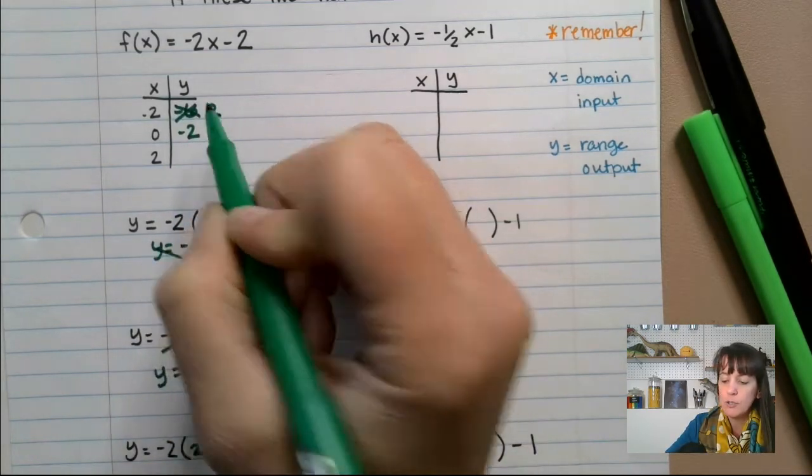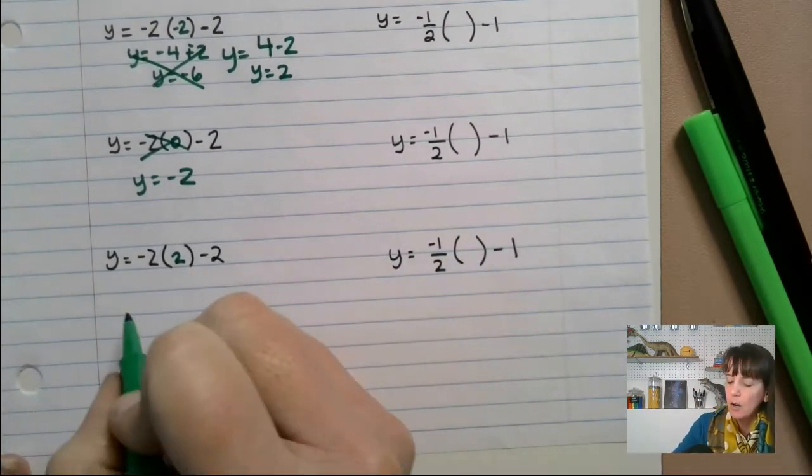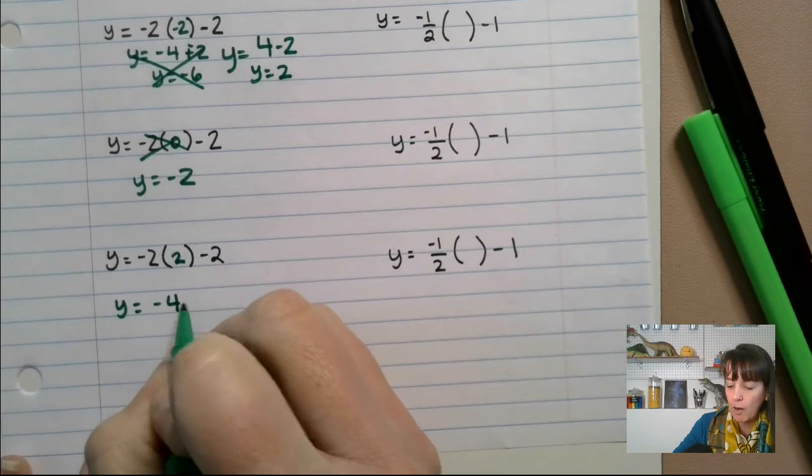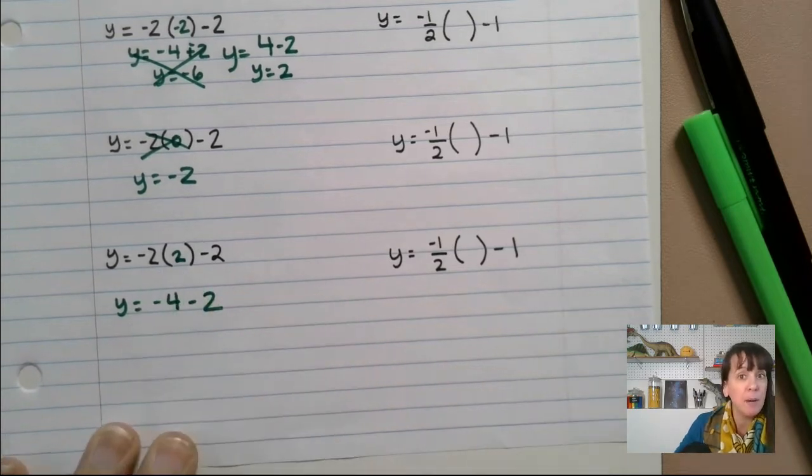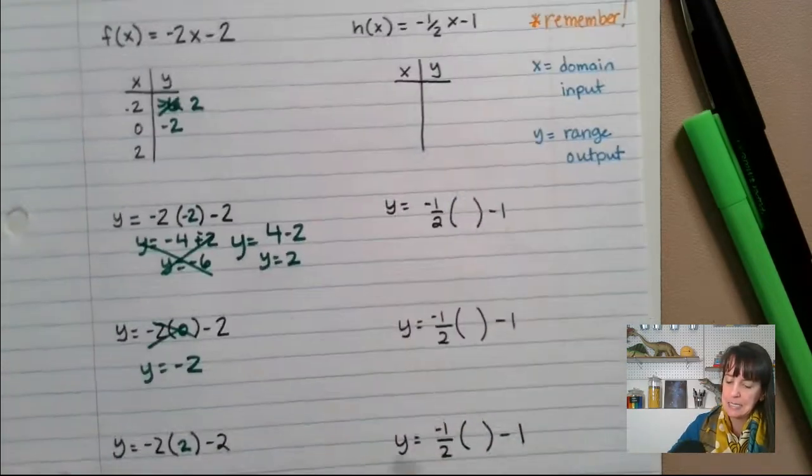I get a little too excited about math and I move a little too fast. I'm sorry. But this time, y equals negative four minus two, because a negative times a positive is a negative. Add the opposite, we get y equals negative six this time.